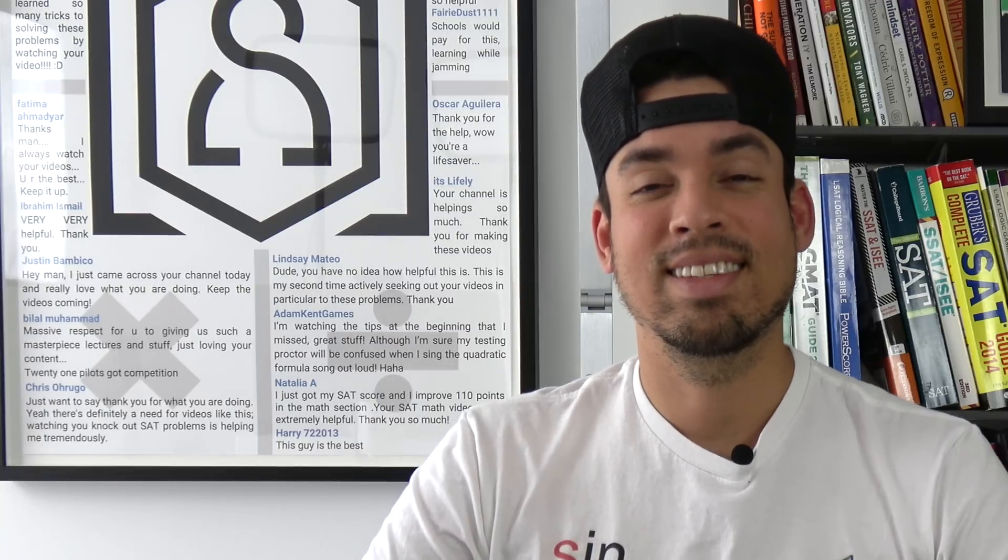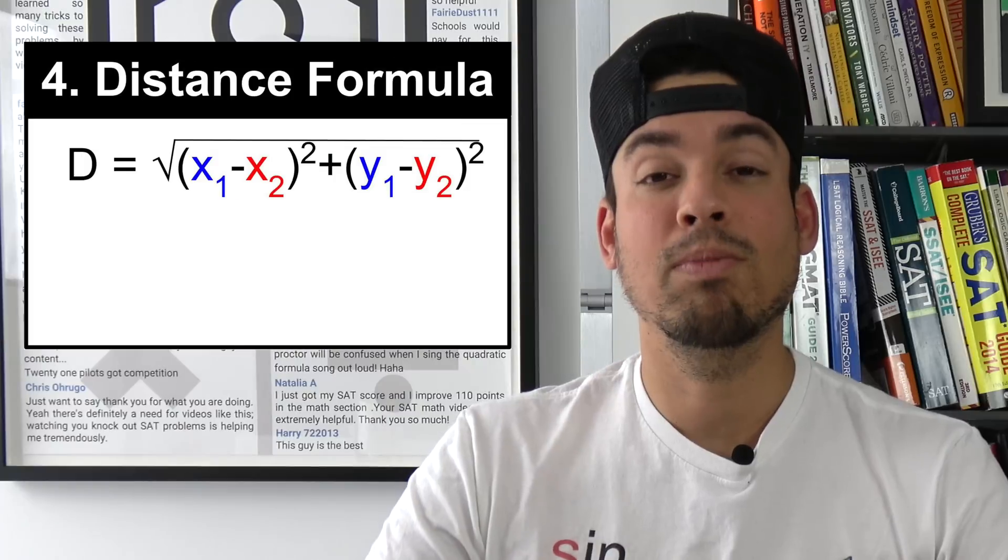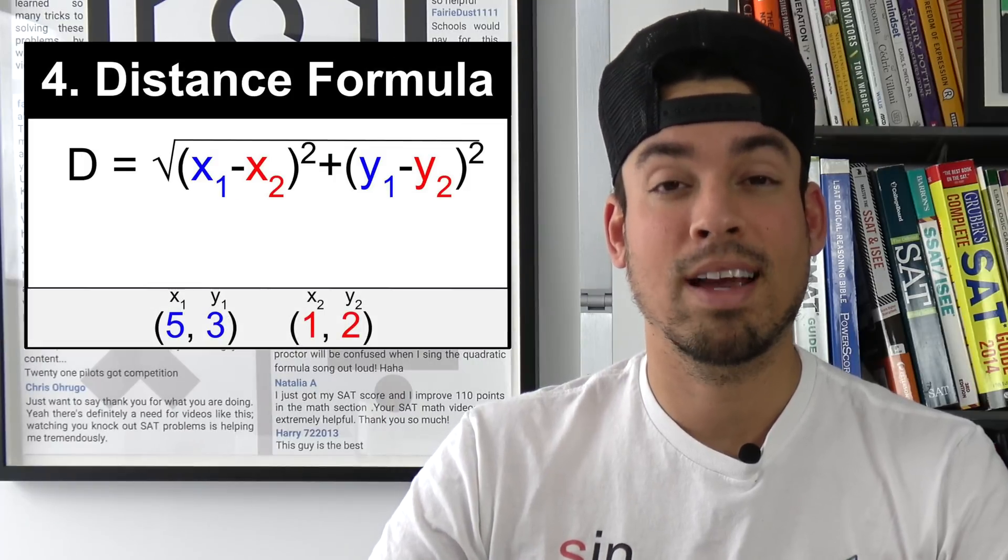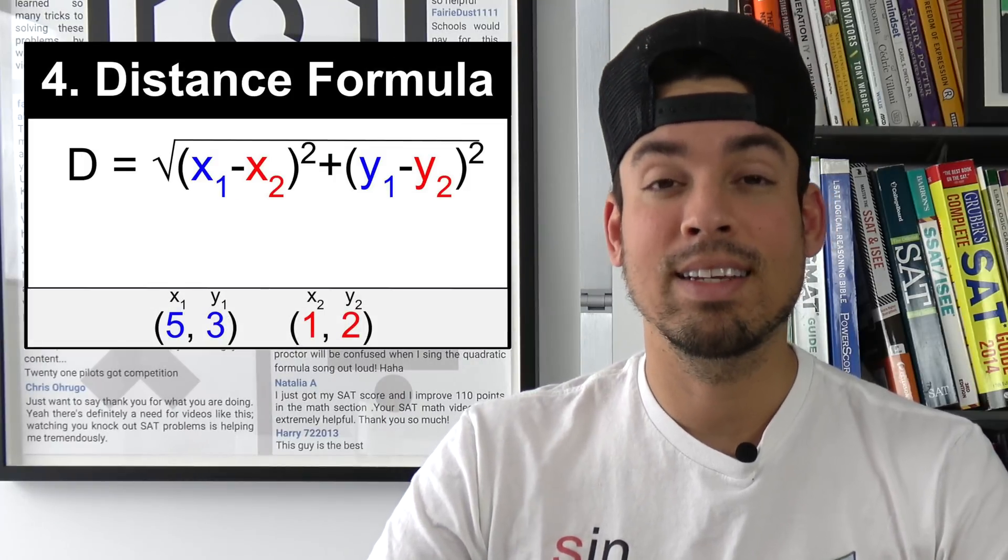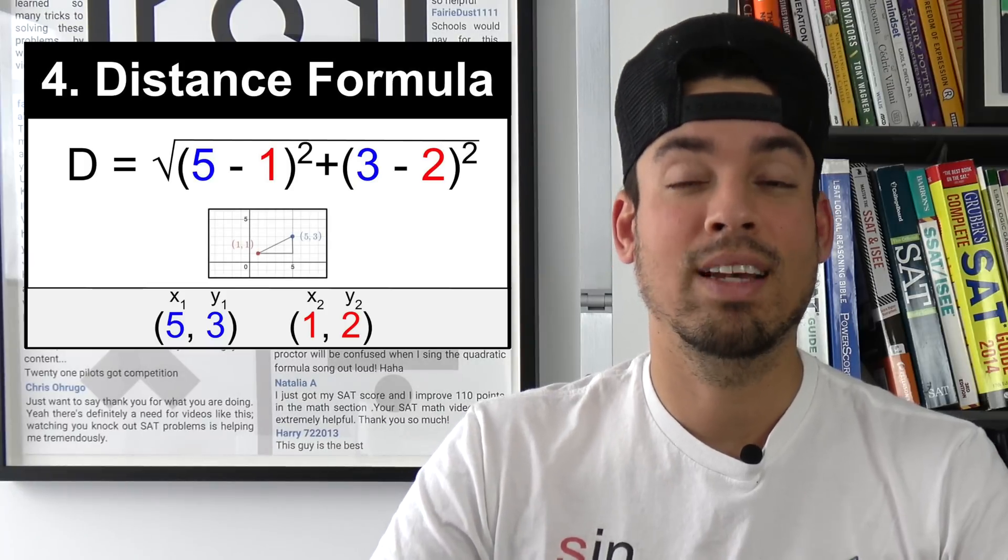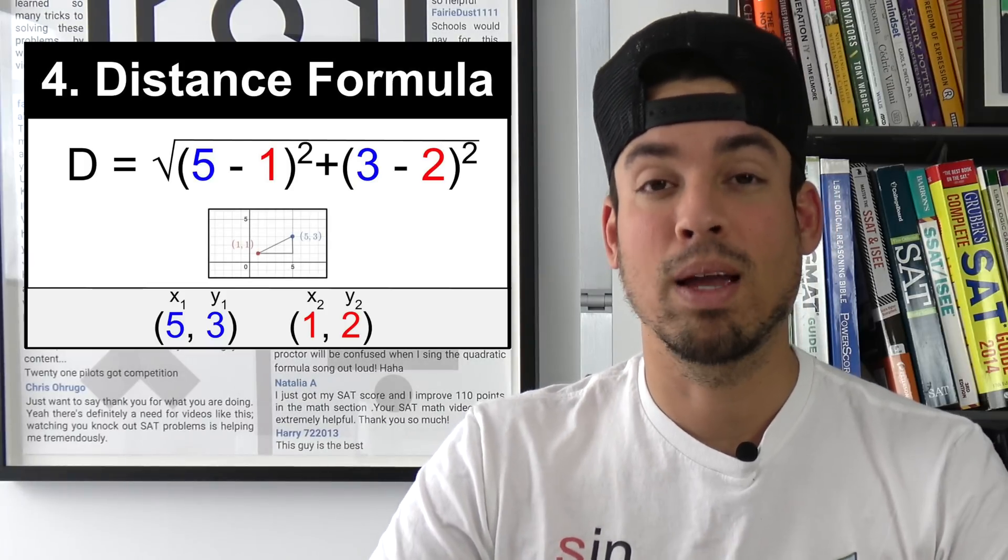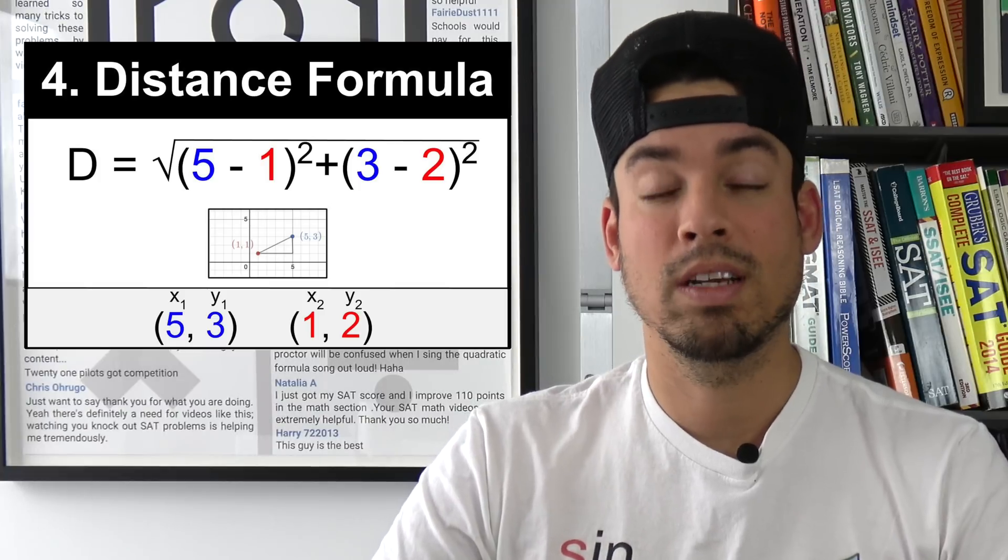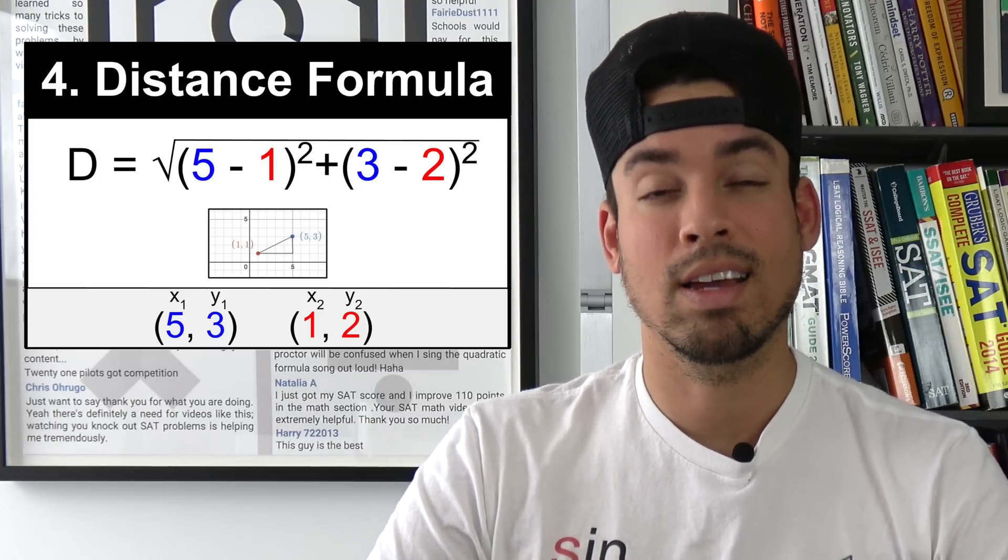Next on the list is the distance formula. Now remember the distance formula is really just Pythagorean's theorem. And if you forget the ins and outs of this formula you can plot the two coordinates and create a little triangle and then just calculate the hypotenuse that way. But this is a really important formula and is almost always tested on the SAT.